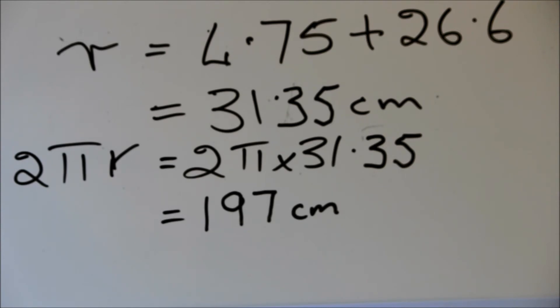Remember that circumference is 2πr, so that's 2 times π times 31.35, which is 197 centimeters. So Space City for the orange will be 197 centimeters long.